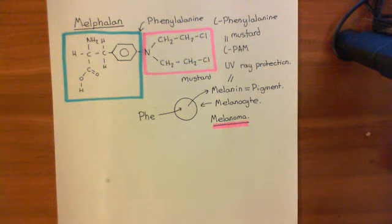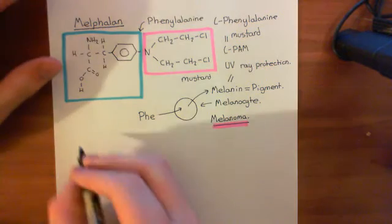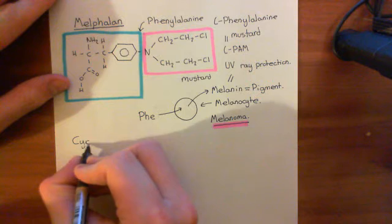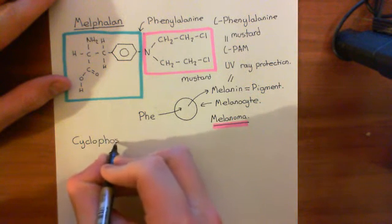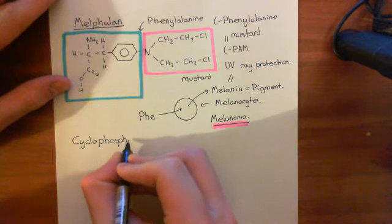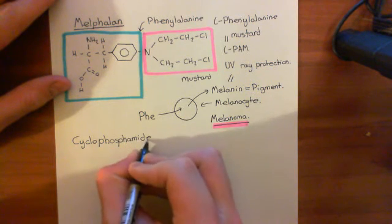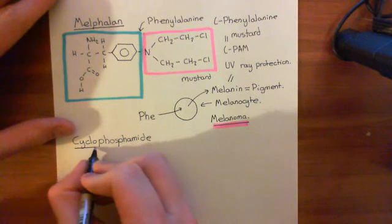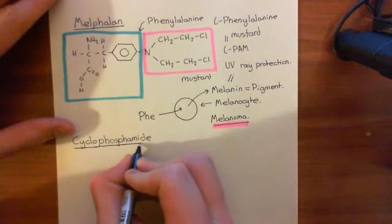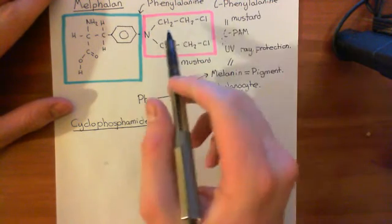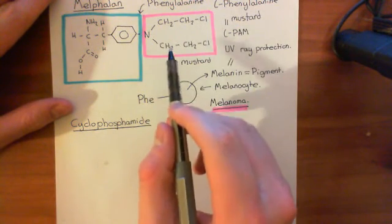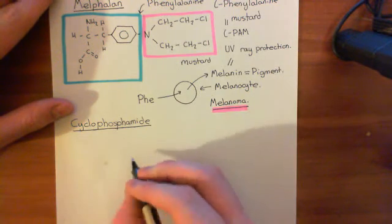Now let's see another example. This next drug is the most commonly used of all the nitrogen mustard drugs. The next drug is known as cyclophosphamide. Let's see the structure of cyclophosphamide. It has to have the same group we've seen already — it has to have these two chloroethyl groups, because those are what are utterly essential for the function of the drug.